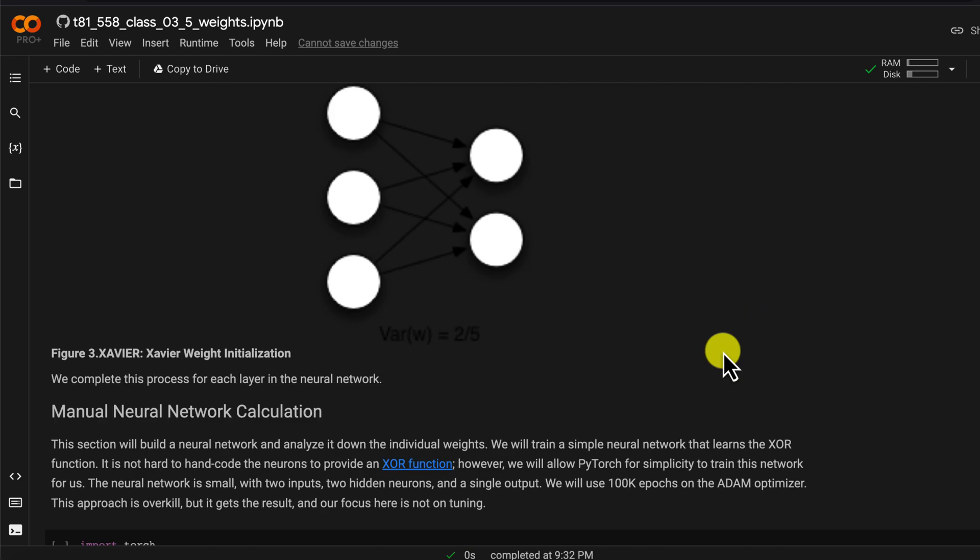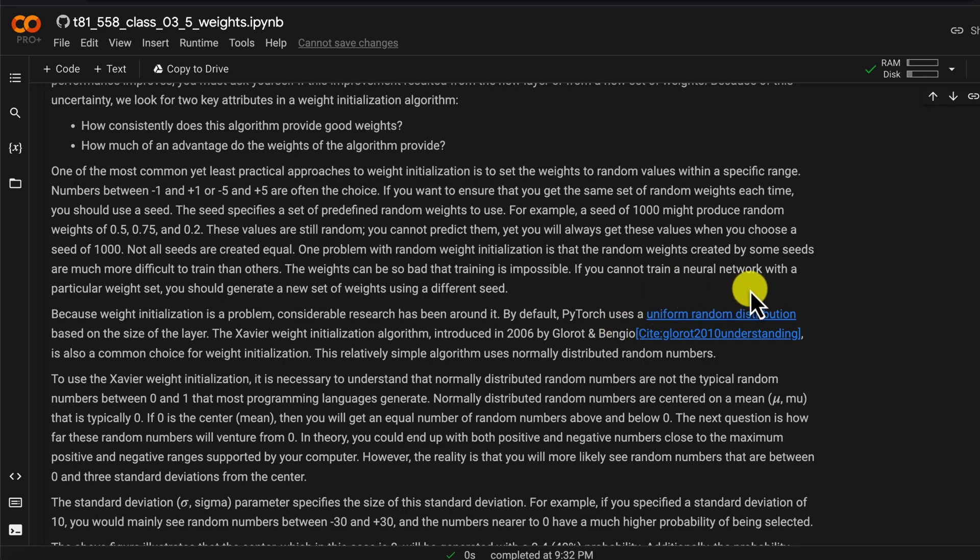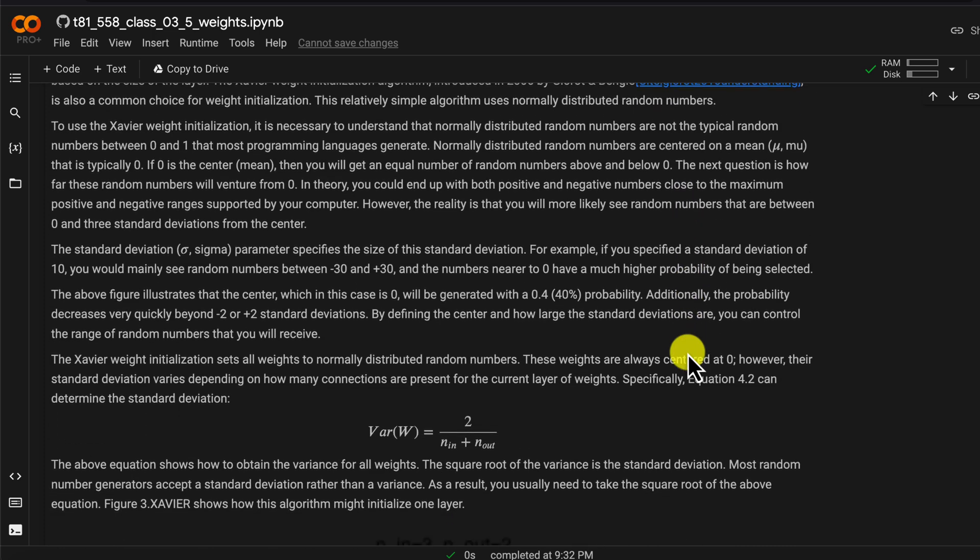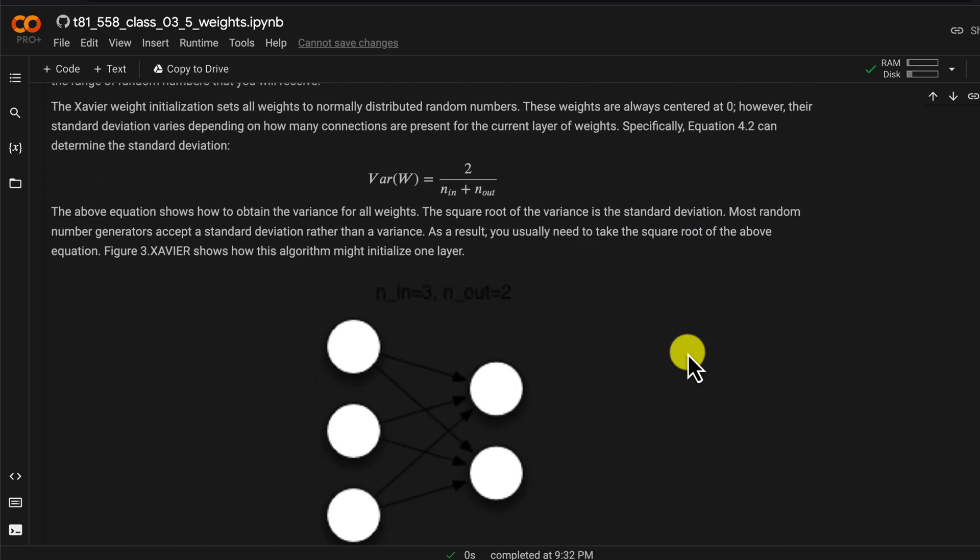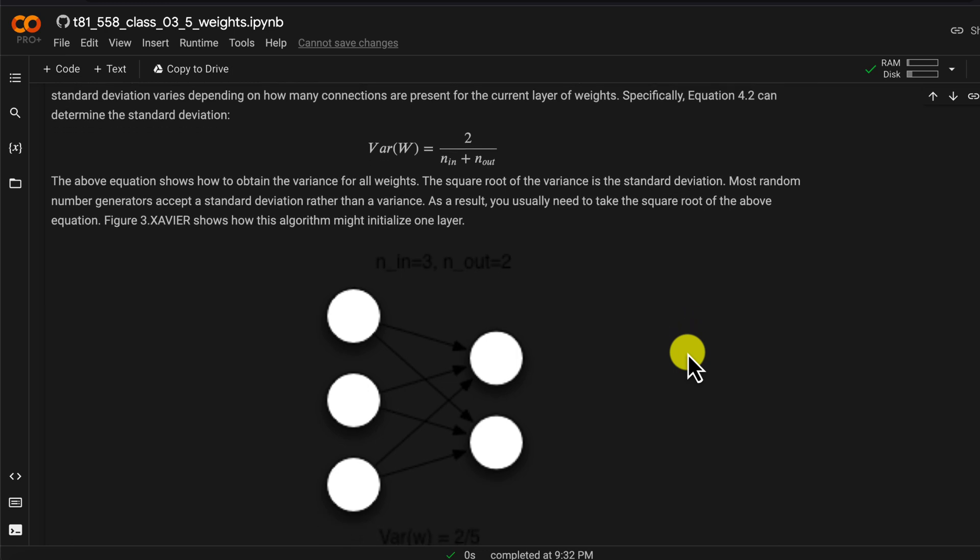By default PyTorch uses a uniform random distribution that is based somewhat on the size of the layer. I've got a link here that describes it. The other one that I've used is the Xavier, often called the Glorot weight initialization algorithm that I have described here. There are various ways of initializing the starting weights for the neural network.